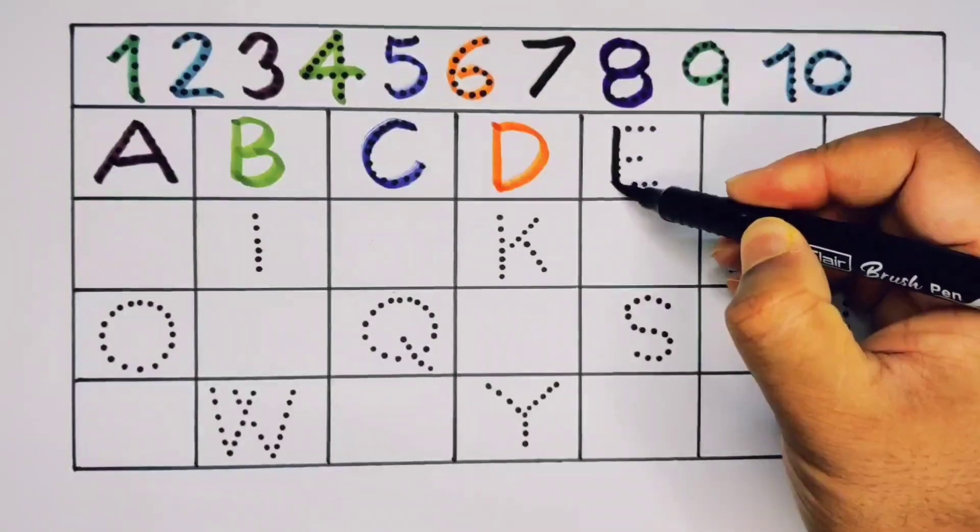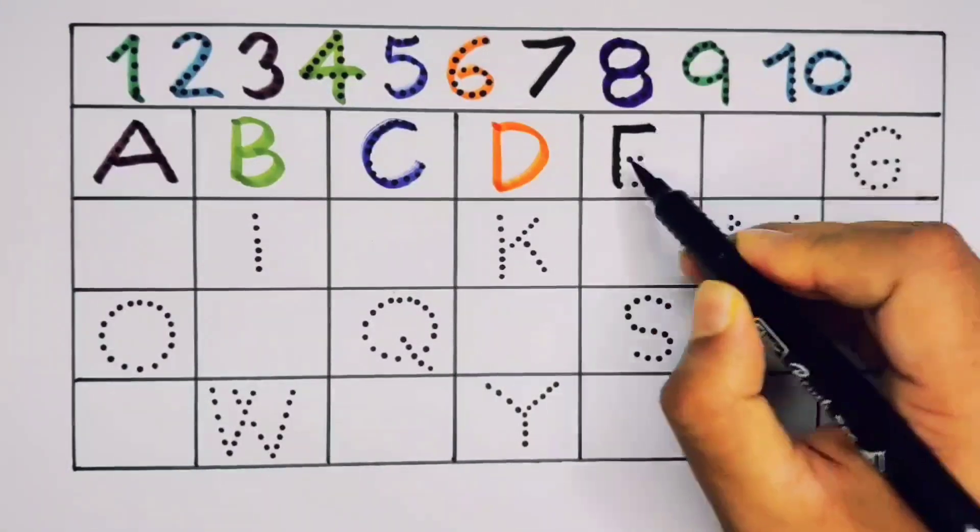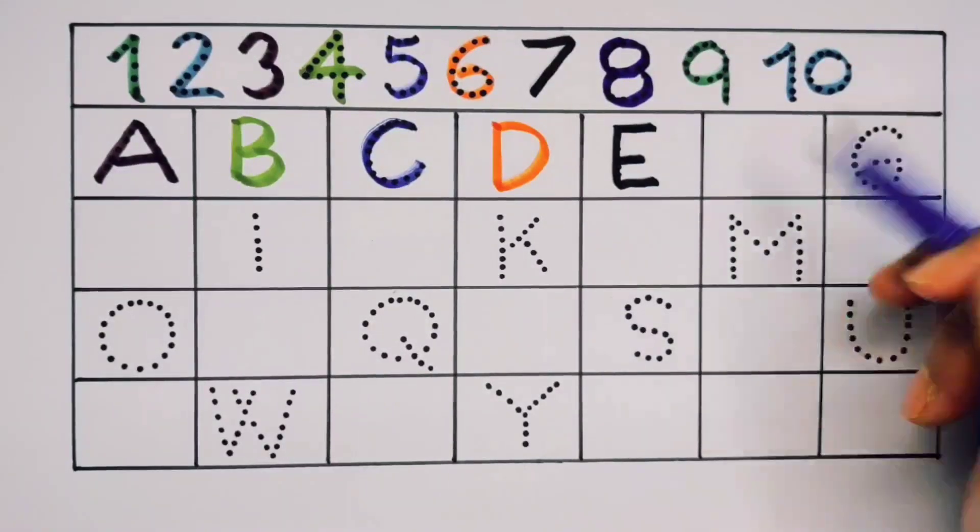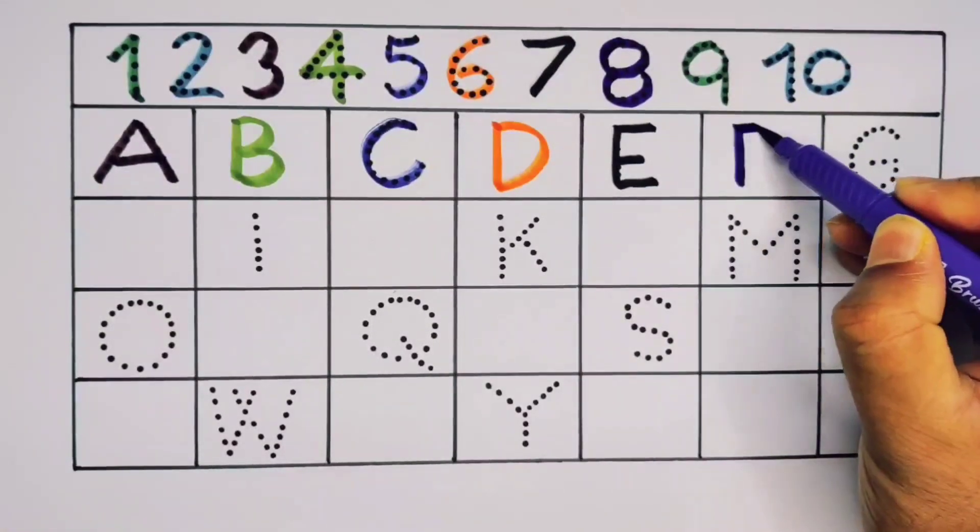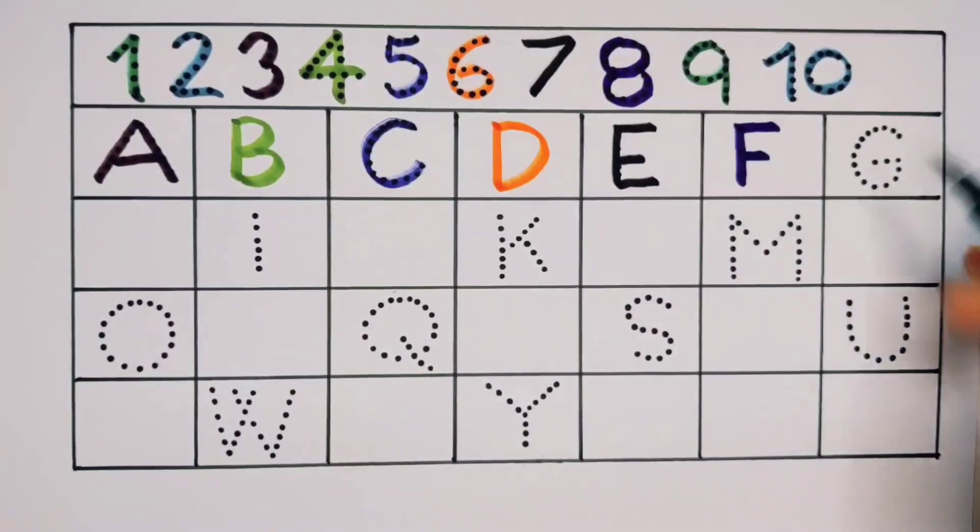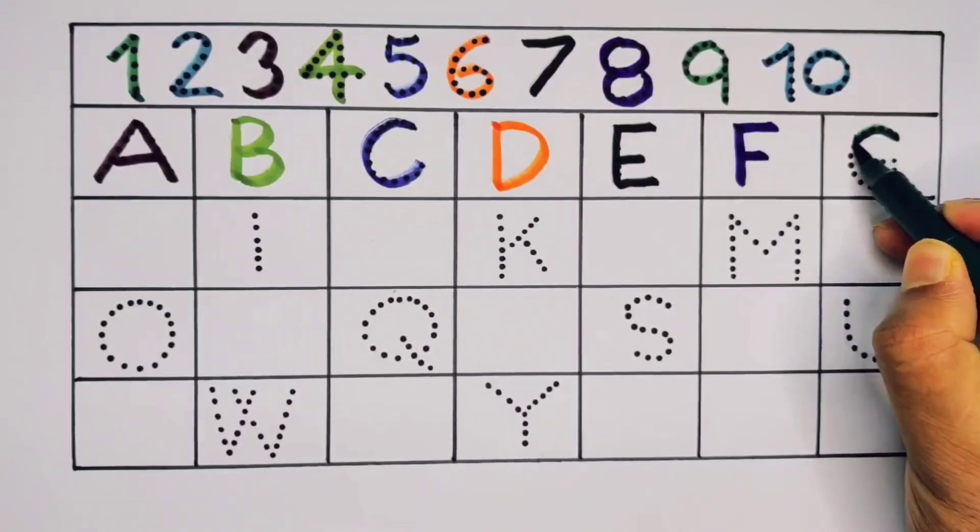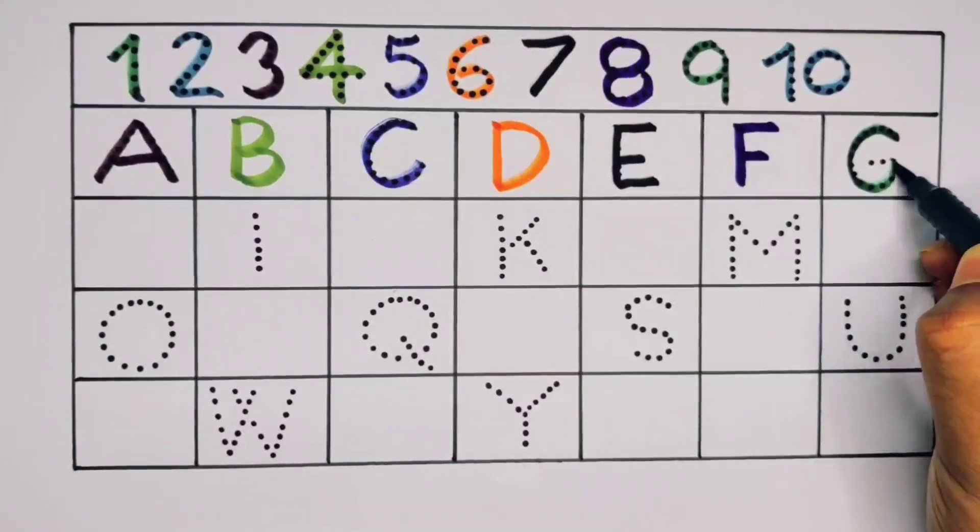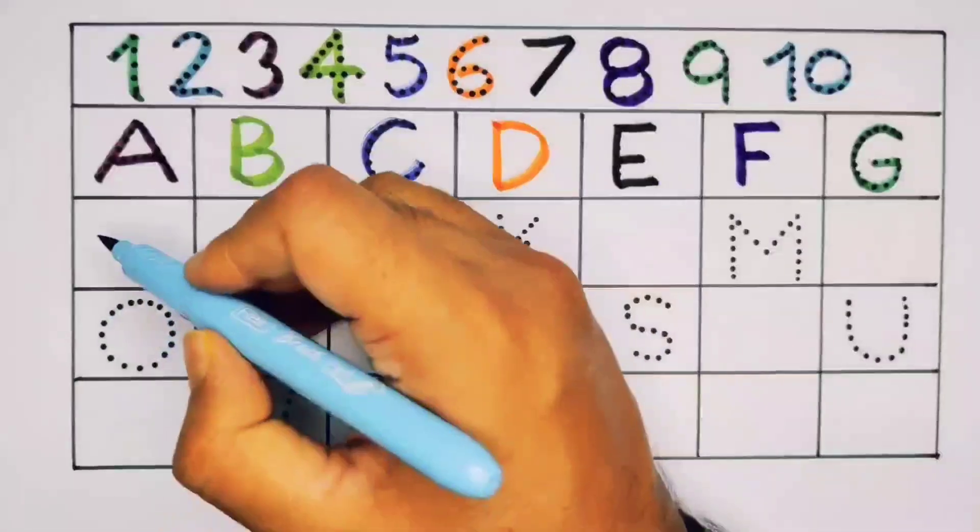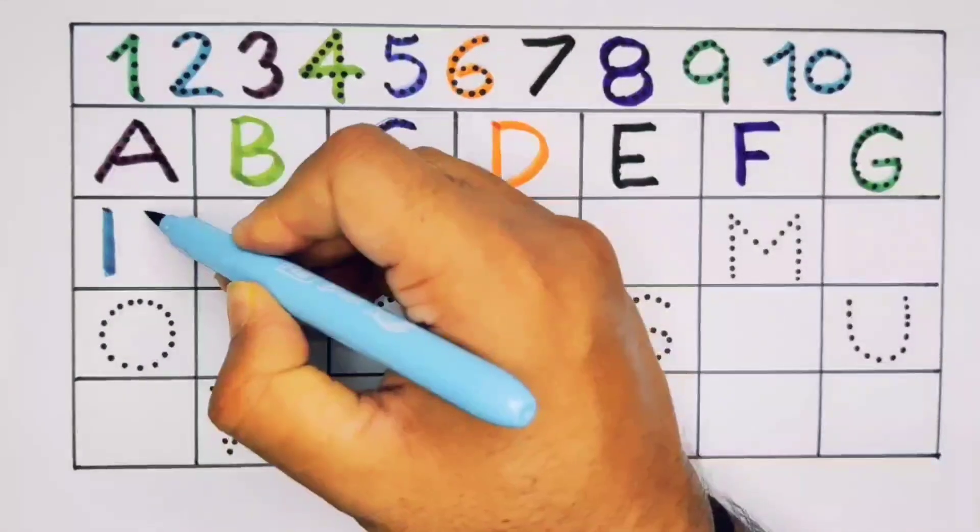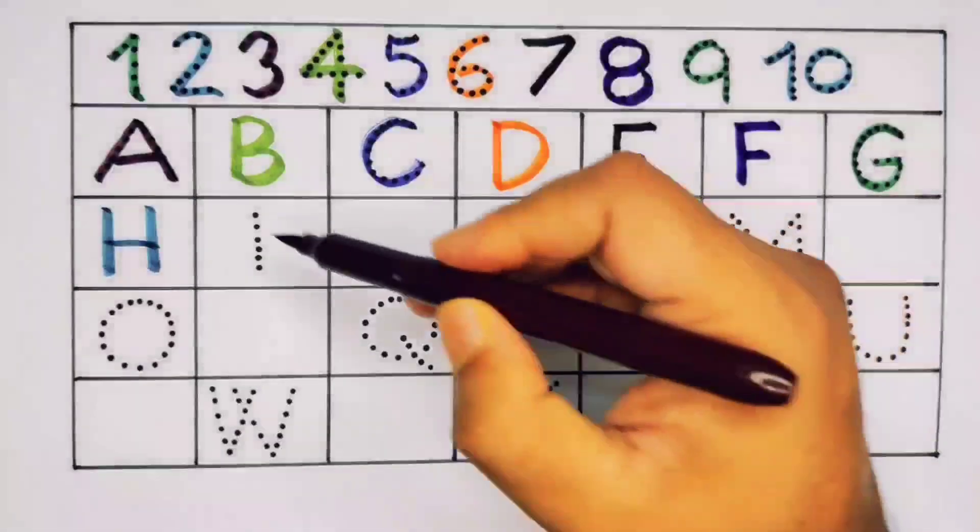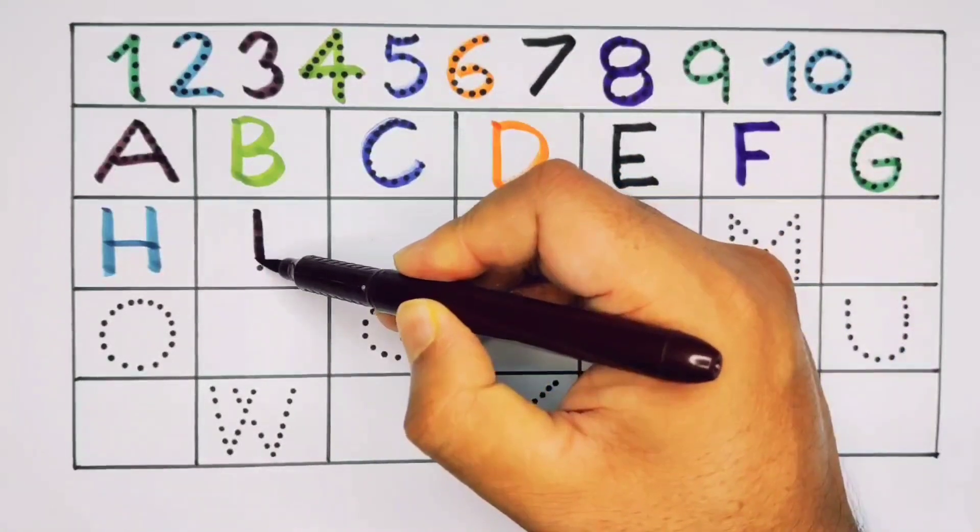E, E for eagle. E for eagle. What will next kids? This is F. F for frog. F for frog. Now G. G for girl. G for girl. What will next? This is H. H for house. H for house.